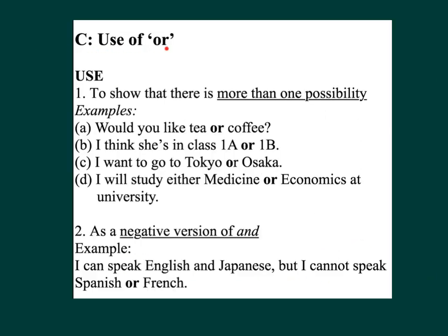C. Use of OR. Number one: To show that there is more than one possibility. Examples: A: 'Would you like tea or coffee?' B: 'I think she is in class 1A or 1B.' C: 'I want to go to Tokyo or Osaka.' D: 'I will study either medicine or economics at university.' Number two: There is a negative version of AND. Example: 'I can speak English and Japanese, but I cannot speak Spanish or French.'